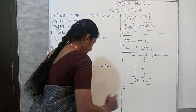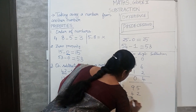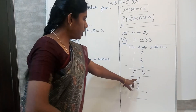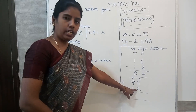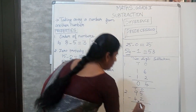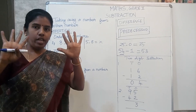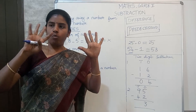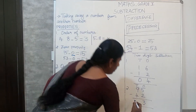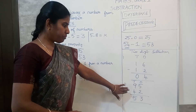Let us see one more example for 2-digit subtraction: 95 minus 42. We have ones and tens. First, the ones place: 5 minus 2. We take away 2 from 5, and the difference is 3. Then the tens place: 9 minus 4. We take away 4 from 9, and the difference is 5. So 53 is the final difference. This is how we do 2-digit subtraction.